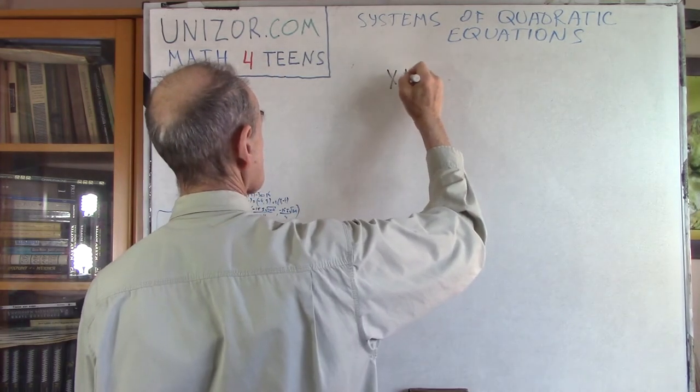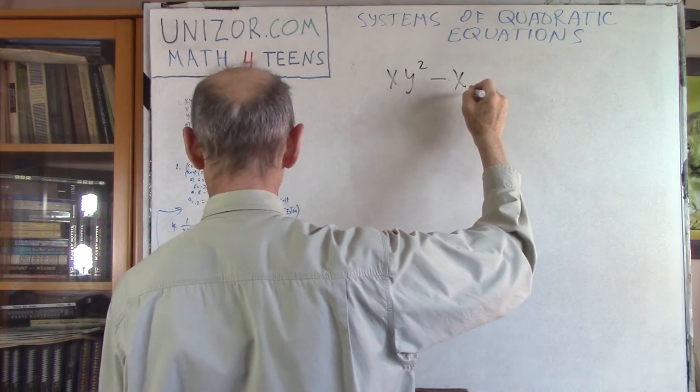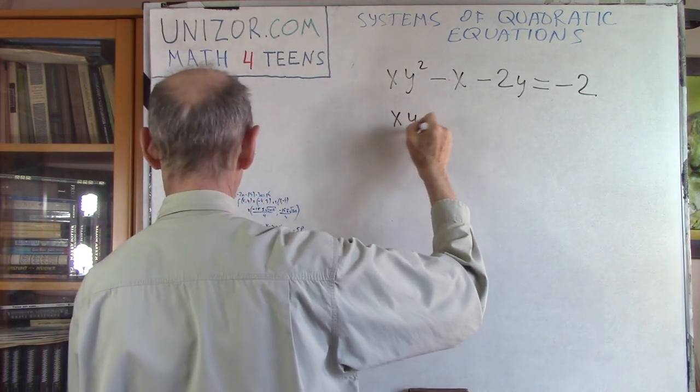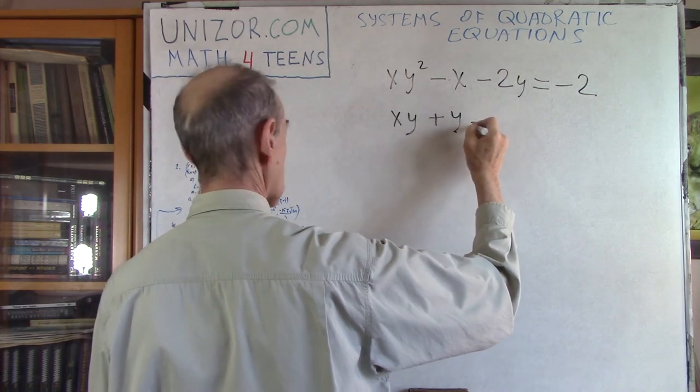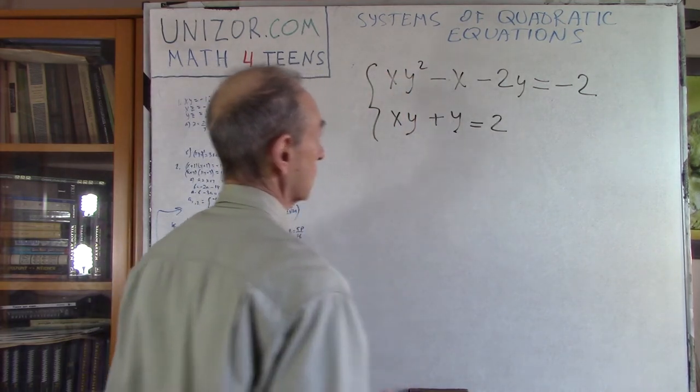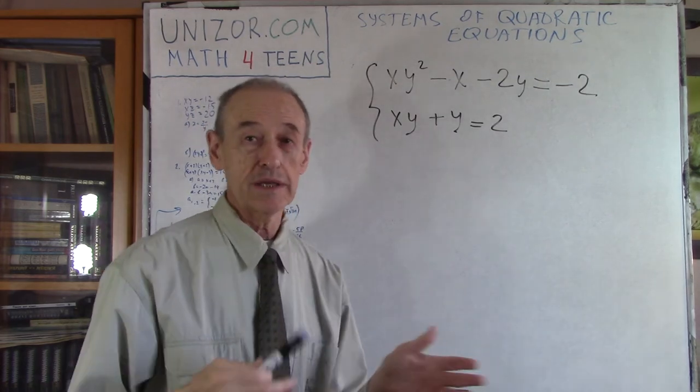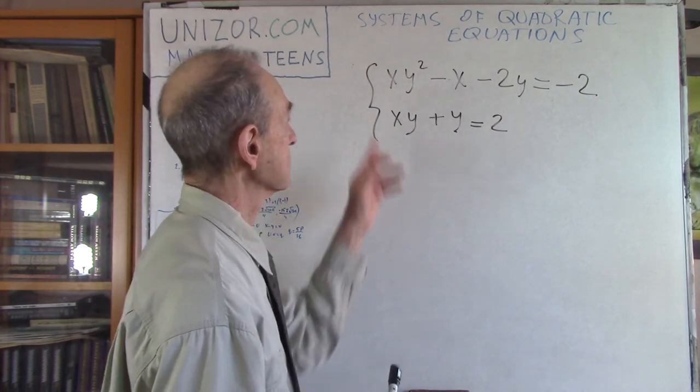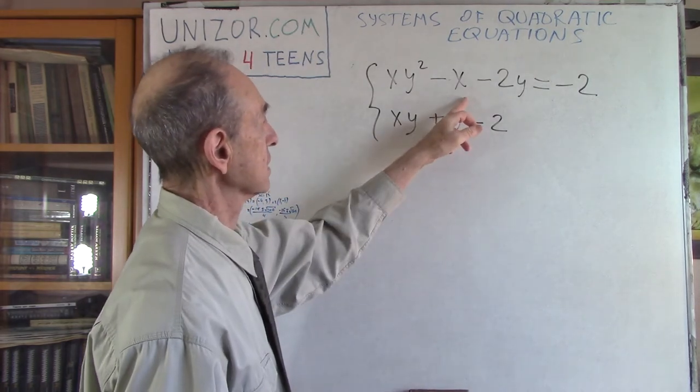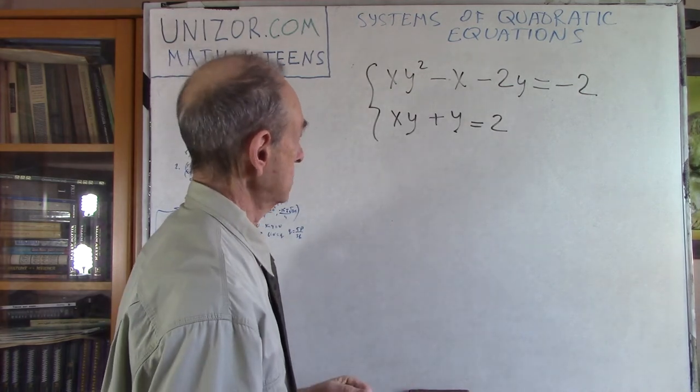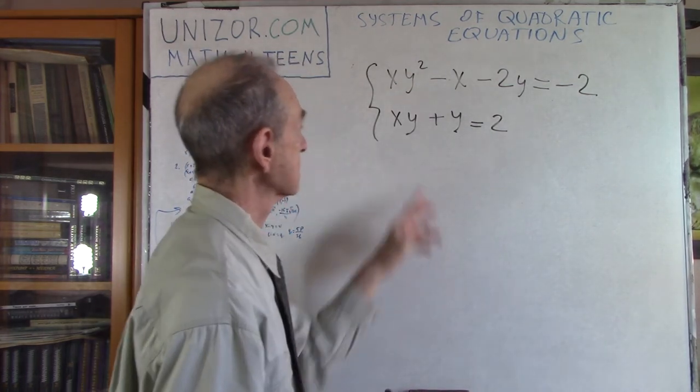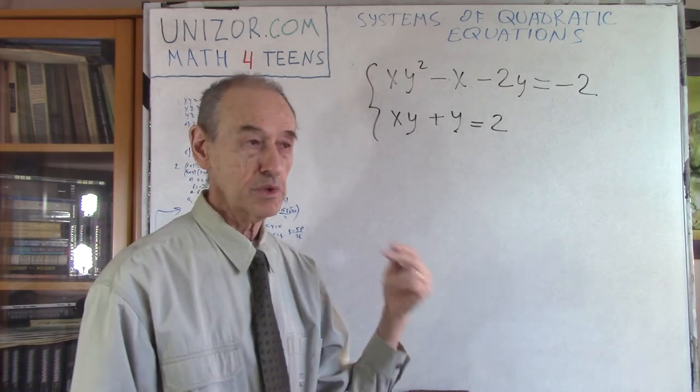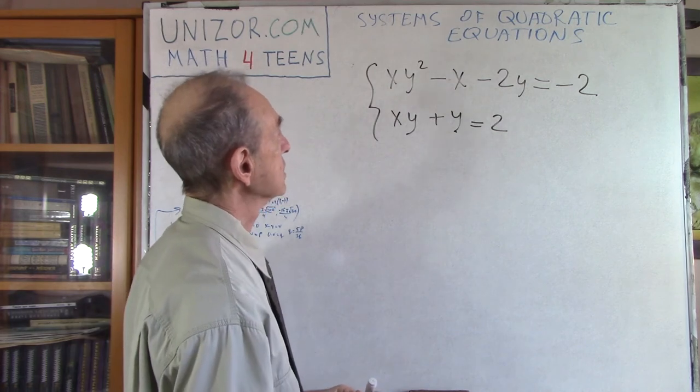Next is XY squared minus X minus 2Y equals minus 2, XY plus Y equals 2. Now, doesn't look in any way symmetry or anything else. It looks actually scary, because in both cases it's kind of difficult. So we need again some kind of a peculiarity of this system which will allow us to simplify it.